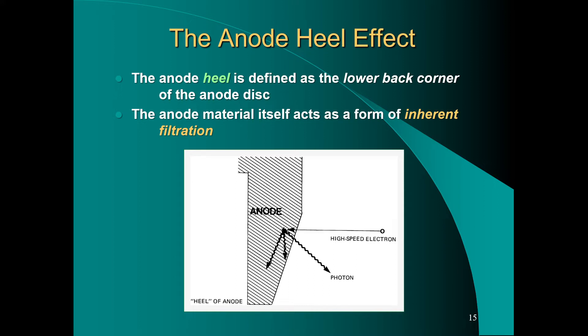The anode heel is defined as the lower back corner of the anode disc. Because electromagnetic radiation — x-rays — is attenuated by matter, and the anode is made of very dense matter, any x-rays traveling toward the anode heel end from the source will be attenuated greater than x-rays traveling toward the cathode.